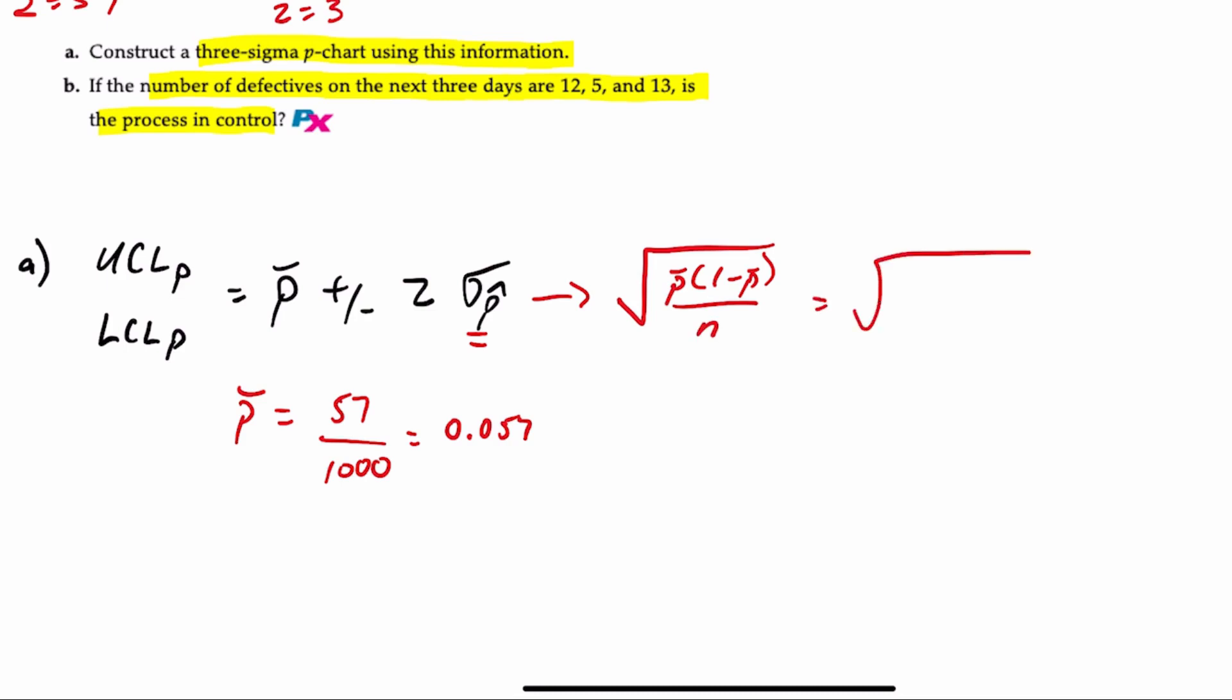So that's equal to the square root of 0.057 times 0.943, because 1 minus 0.057 is 0.943, divided by 100, and that is equal to 0.023.